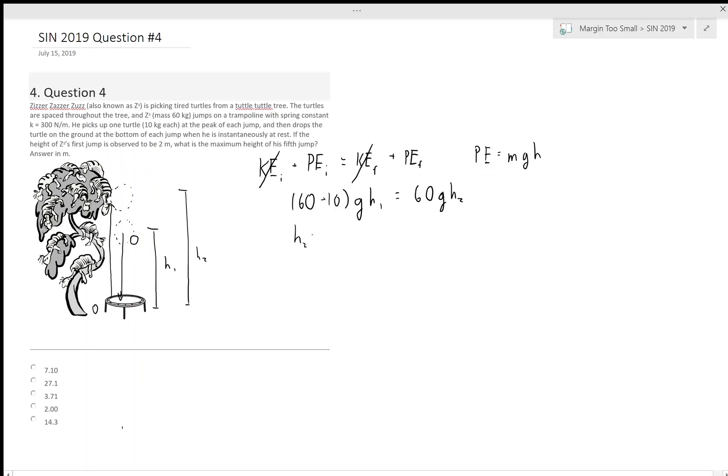Solving for h2 gives 60 plus 10 equals 70. We cancel the g's, divided by 60, h1, or we can simplify this as h2 equals 7 over 6, h1.